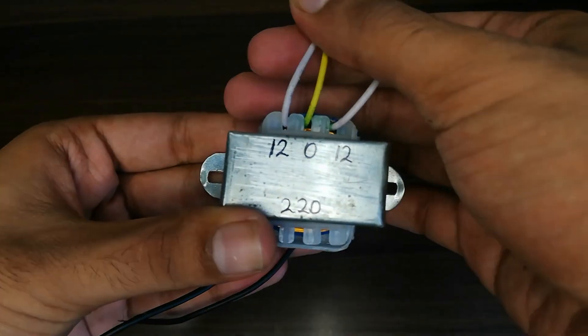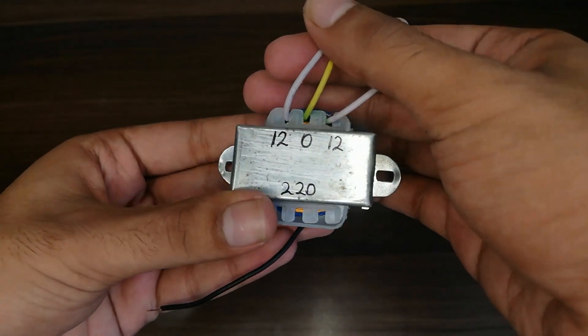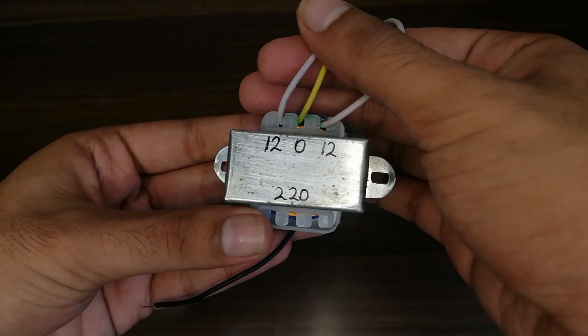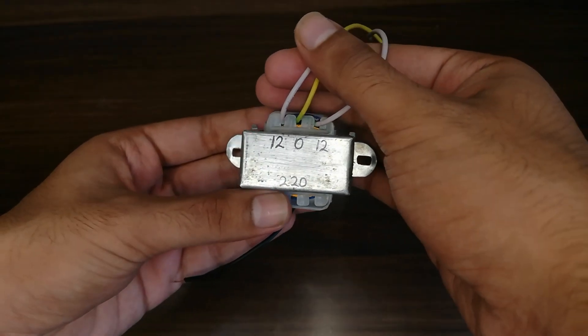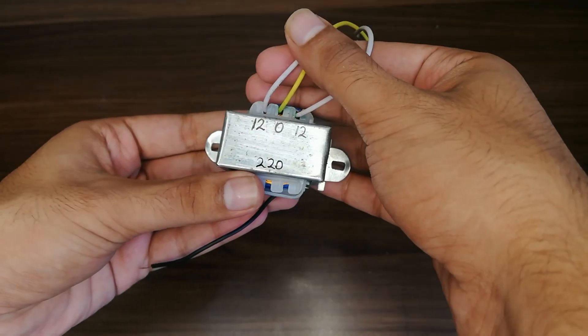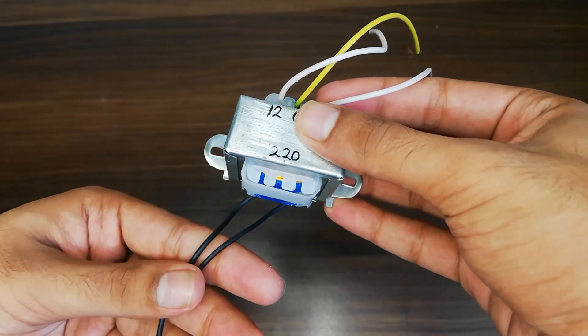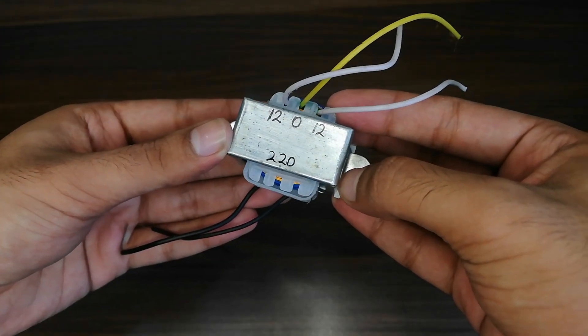This way we can get different turn ratios on the secondary and hence a desired output voltage. For the explanation, I am using a three-wire center tap transformer. In center tap transformers, only one tap is made at the exact midpoint of the secondary winding.